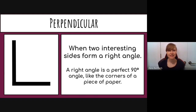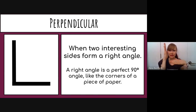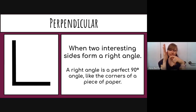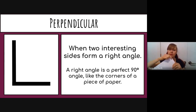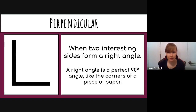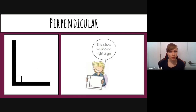Perpendicular means two intersecting sides that form a right angle. That happens when there is one vertical and one horizontal side, or sides at that special angle. Like the corner of a book — that corner has perpendicular angles, which are also called right angles and measure 90 degrees. We show perpendicular sides by drawing a small square inside the corner of the shape.